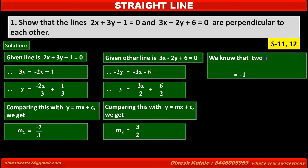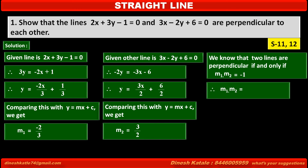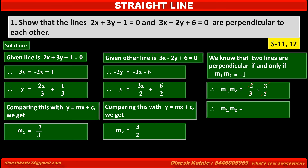We know that two lines are perpendicular if and only if M1 into M2 is equal to minus 1. The product of these two slopes is: M1 into M2 is equal to minus 2 upon 3 into 3 upon 2. The 2s cancel each other and the 3s cancel each other, therefore M1 into M2 is equal to minus 1.